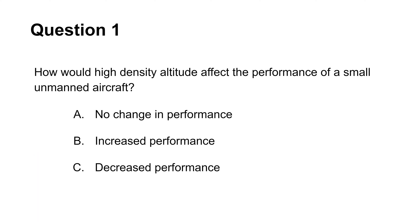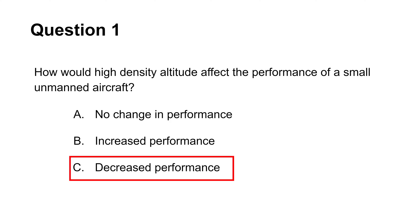The first question asks you to identify the effect of high density altitude on aircraft performance. We know that the higher the density altitude is, the lower the performance of an aircraft is. Thus, the answer is C.